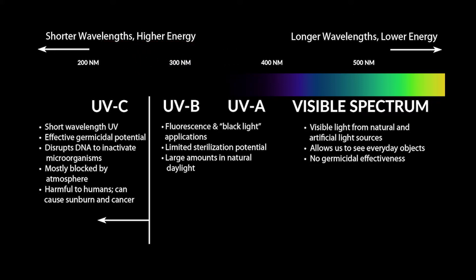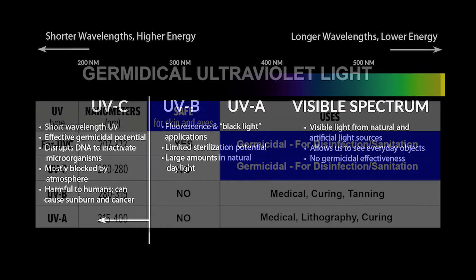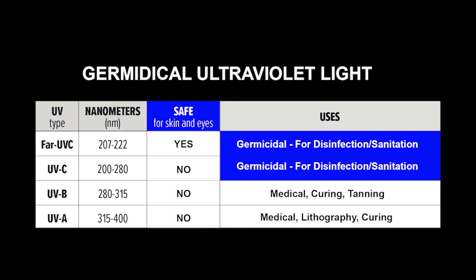All of UVC and most of UVB is absorbed by ozone, water vapor, oxygen, and carbon dioxide, while none of UVA is absorbed or filtered through the atmosphere. This means that no UVC light makes its way through the Earth's atmosphere.